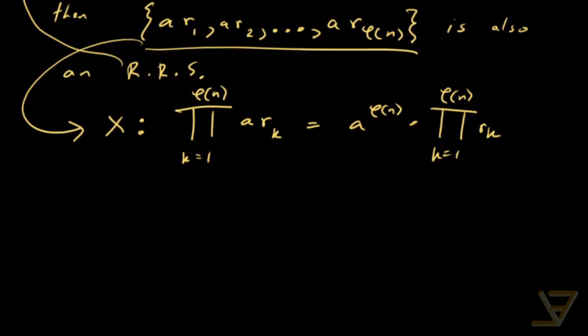But because this is just a permutation of the r k, we get that this is also equal to the product of k equals 1 phi of n of r k. And now we're going to equate these two to each other.